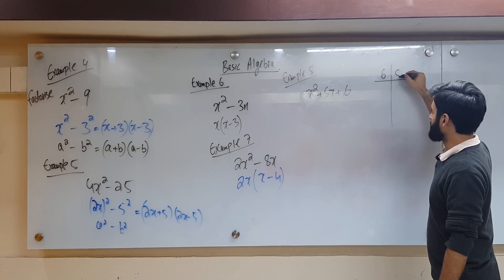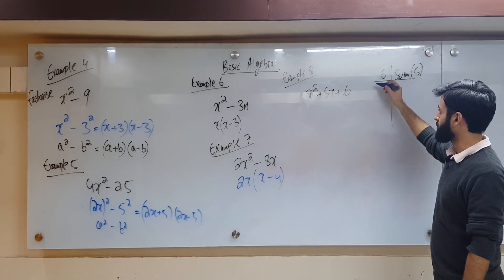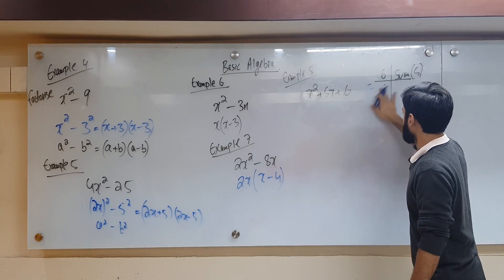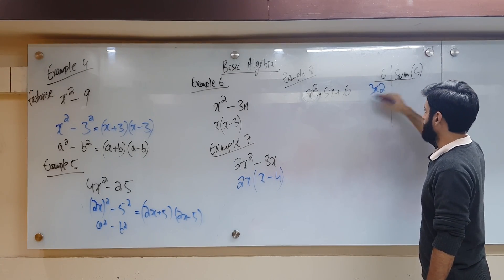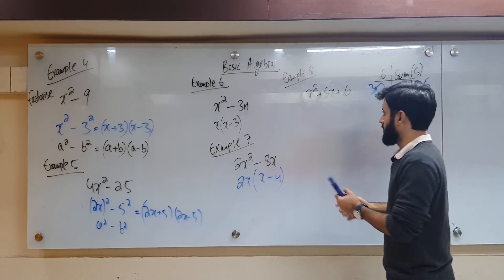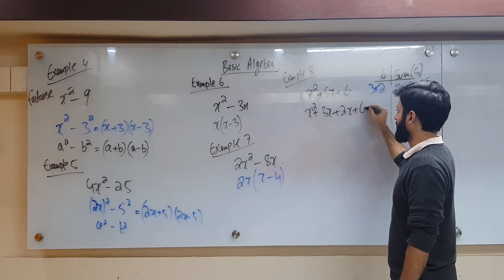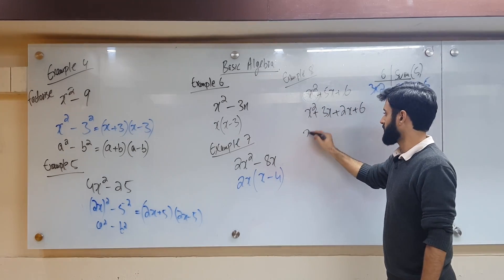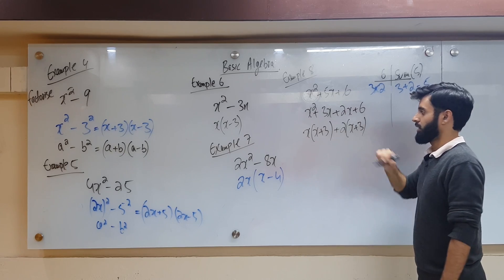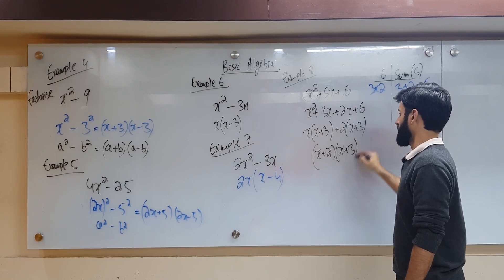We need two numbers whose sum is 5 and whose product is 6. We can't take 6 and minus 1 because 6 times minus 1 gives minus 6. We take 3 and 2, because 3 times 2 gives 6 and 3 plus 2 gives 5. So we break it as x squared plus 3x plus 2x plus 6. Factoring out x from the first pair gives x plus 3, and factoring 2 from the second pair also gives x plus 3. So the result is x plus 2 times x plus 3.